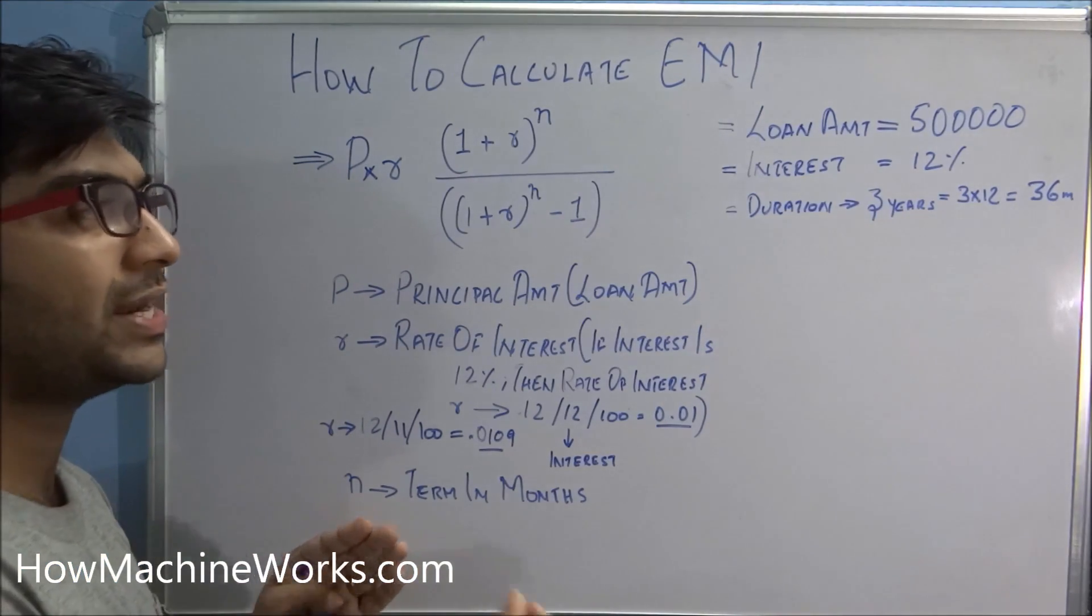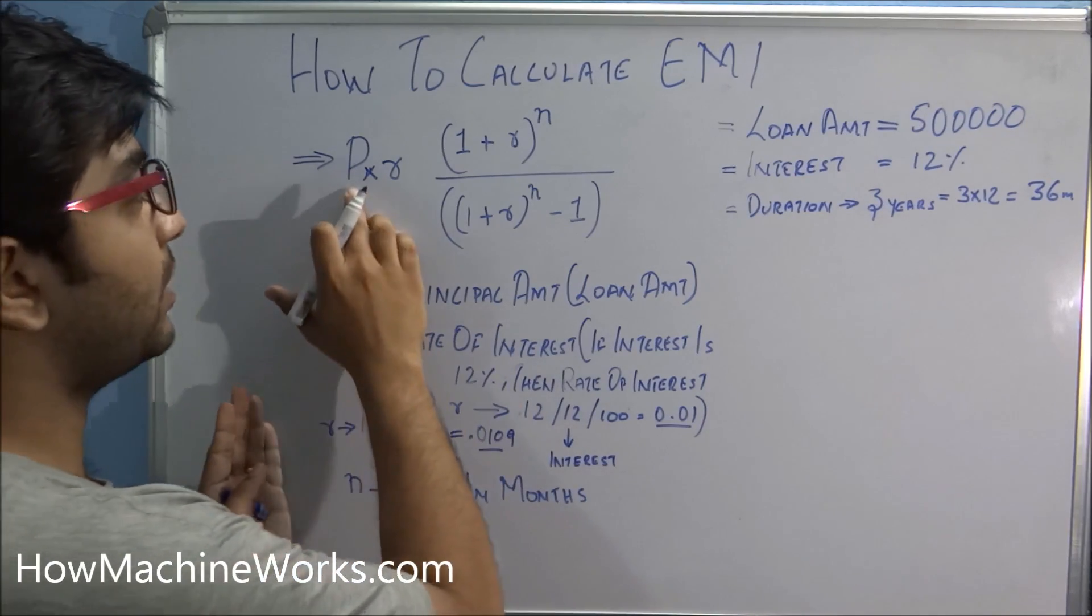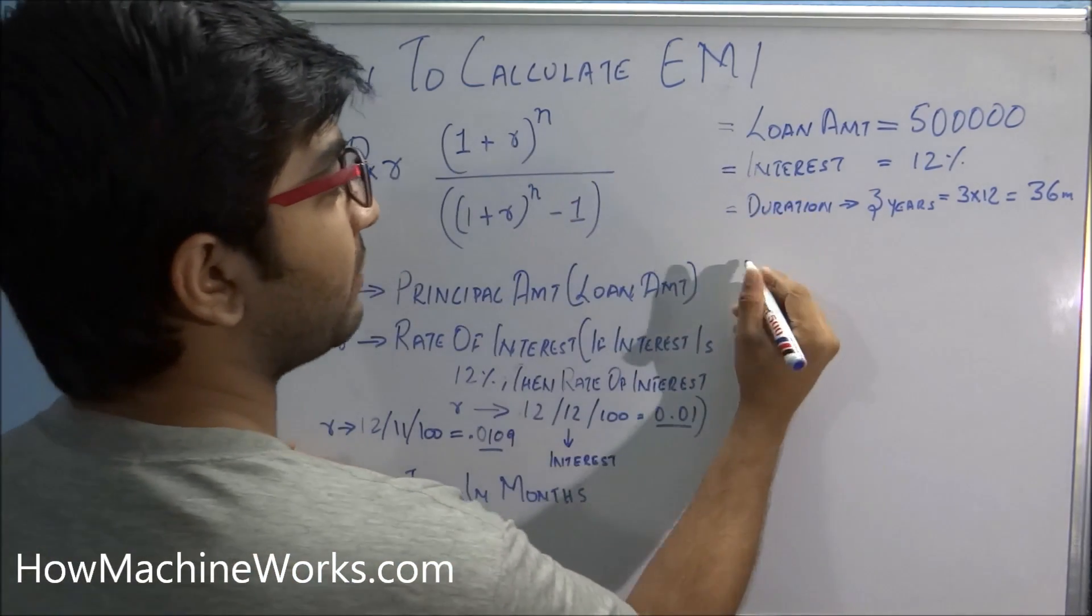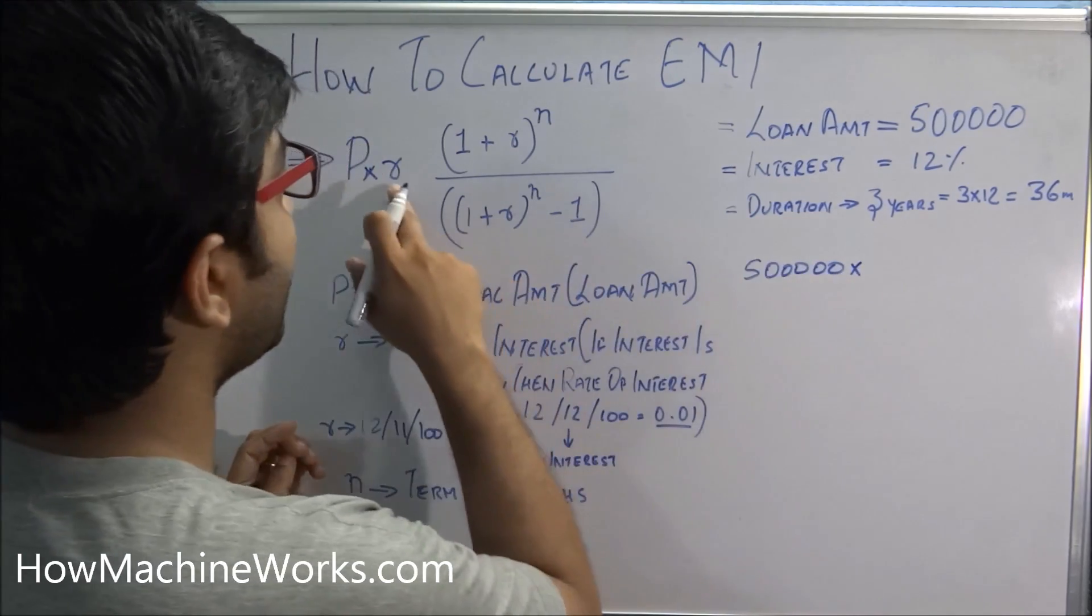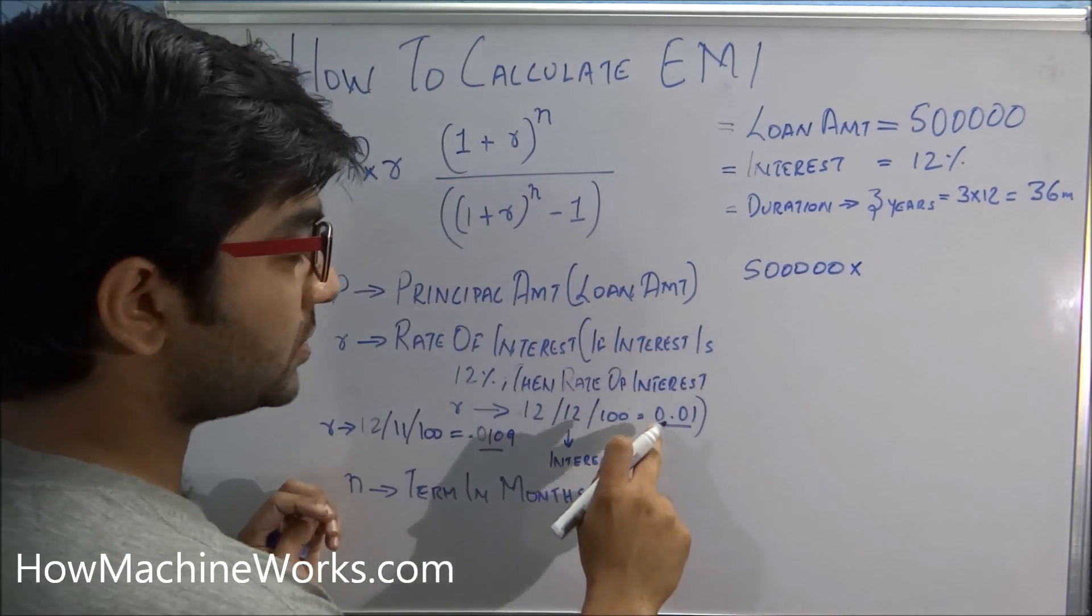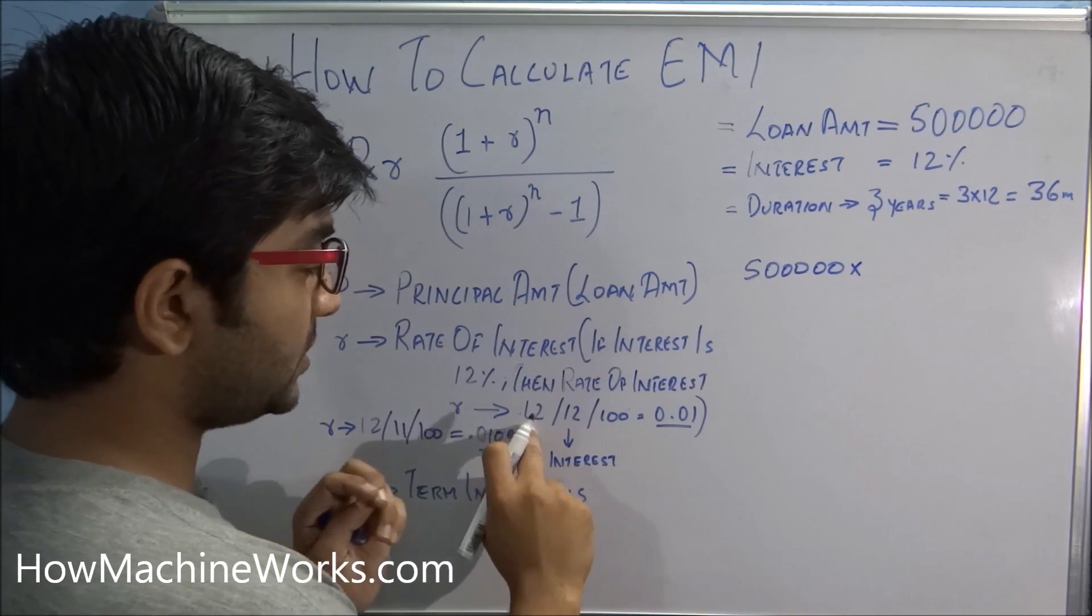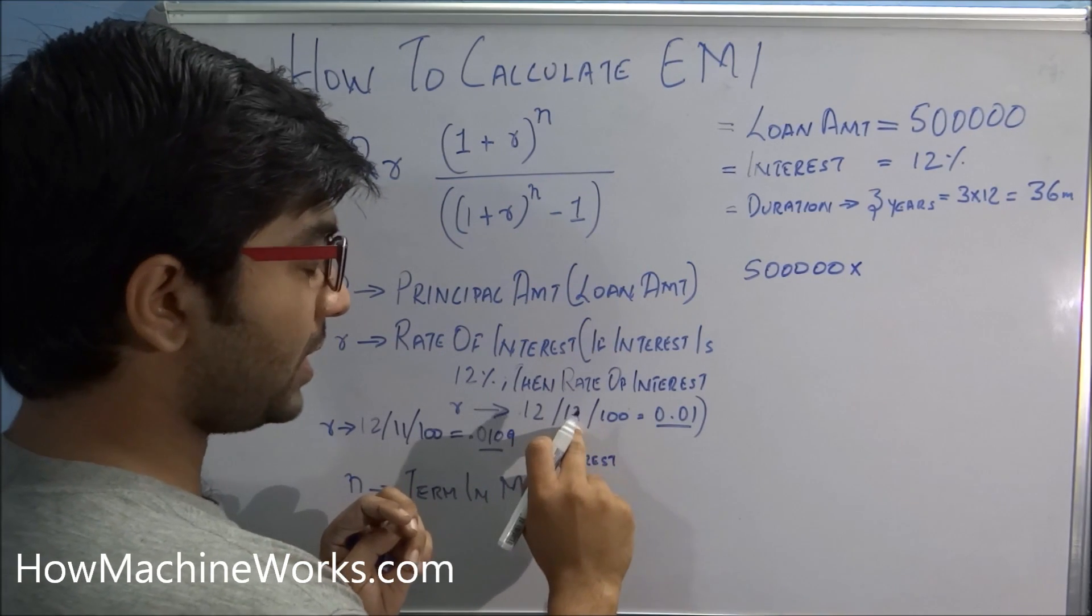So P, P is 5 lakhs, okay, and into the R. So here the value of R is 0.01, that is 12 in months divided by 12 percent in interest divided by 100, that is 0.01.